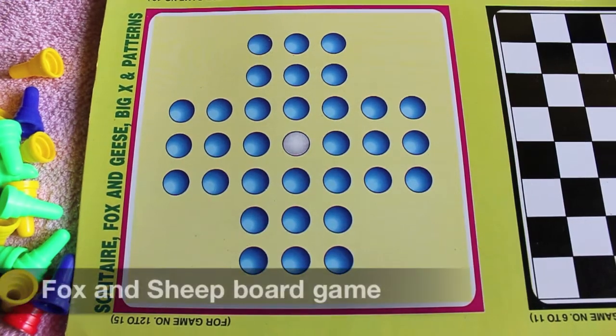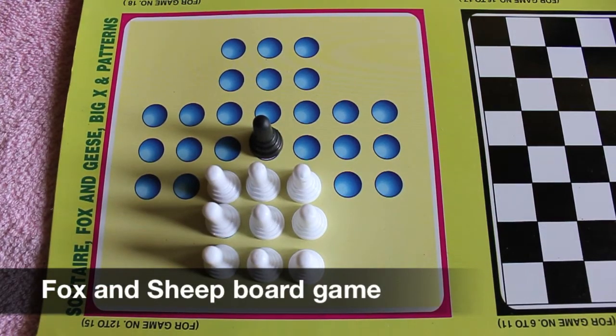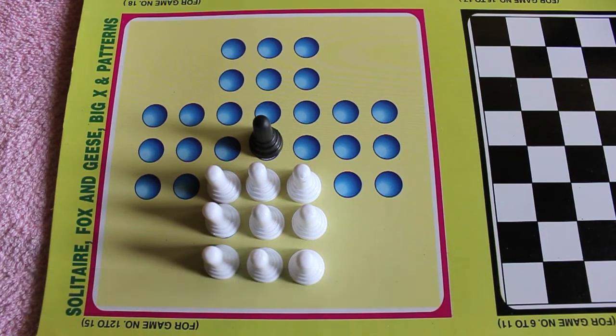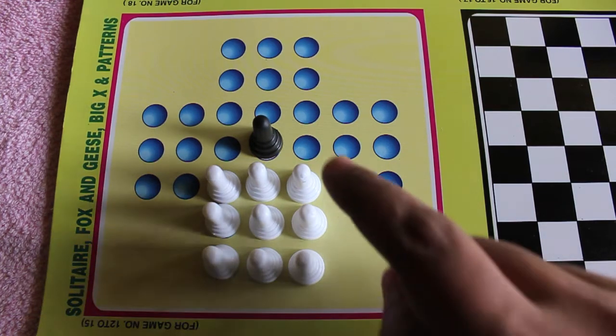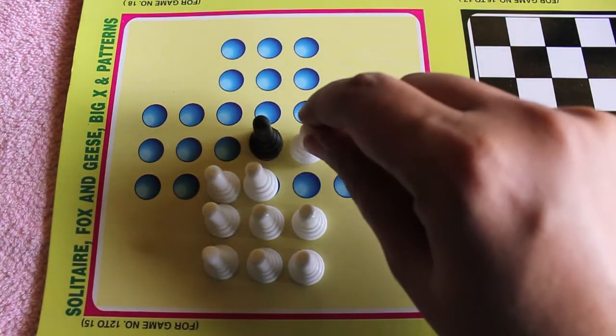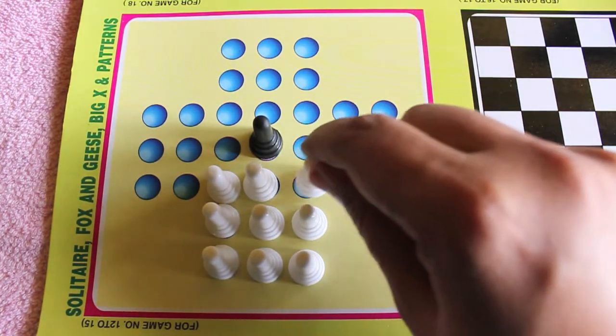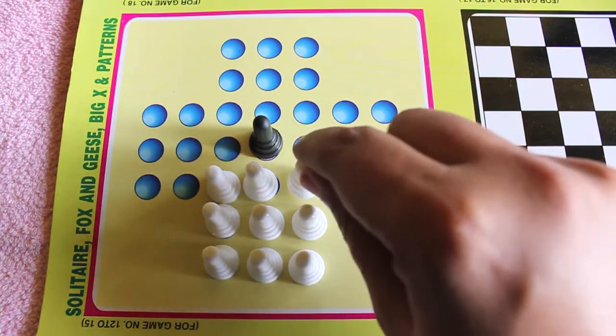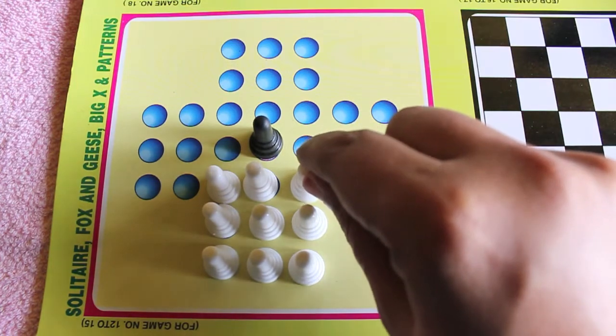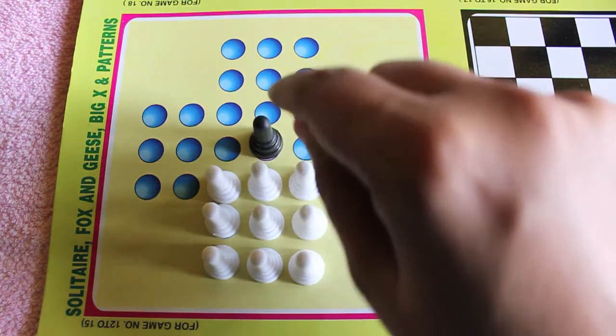Hello guys, let's take a look at the game called Fox and Sheep. The white pieces are the sheep and one player plays as white. You can only move one step, you cannot go over other pieces. The black one is the Fox.